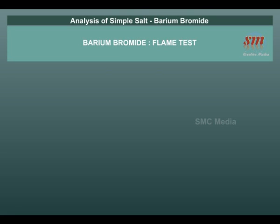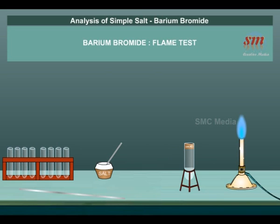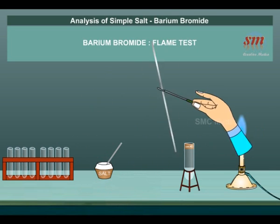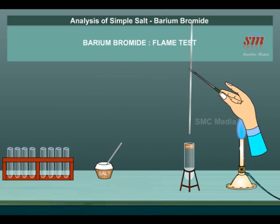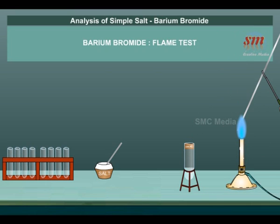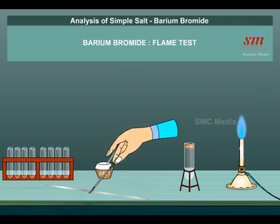Analysis of simple salt: Barium Bromide experiment — Flame Test. Clean the platinum wire by dipping in concentrated HCl and heat it in the flame until no color appears.